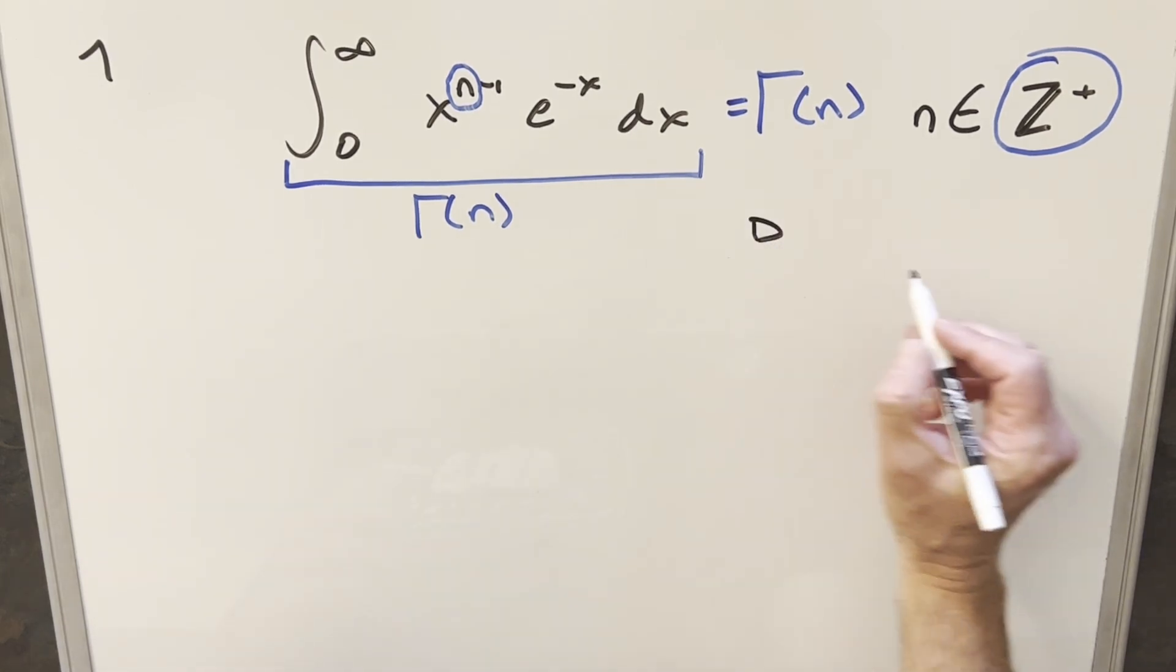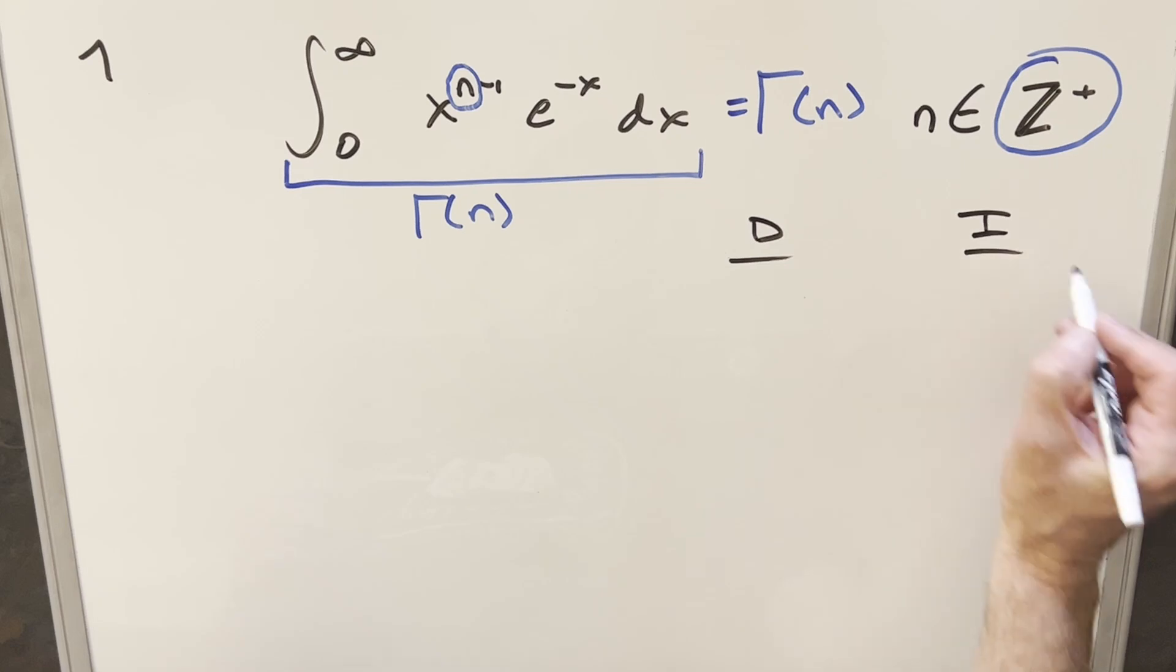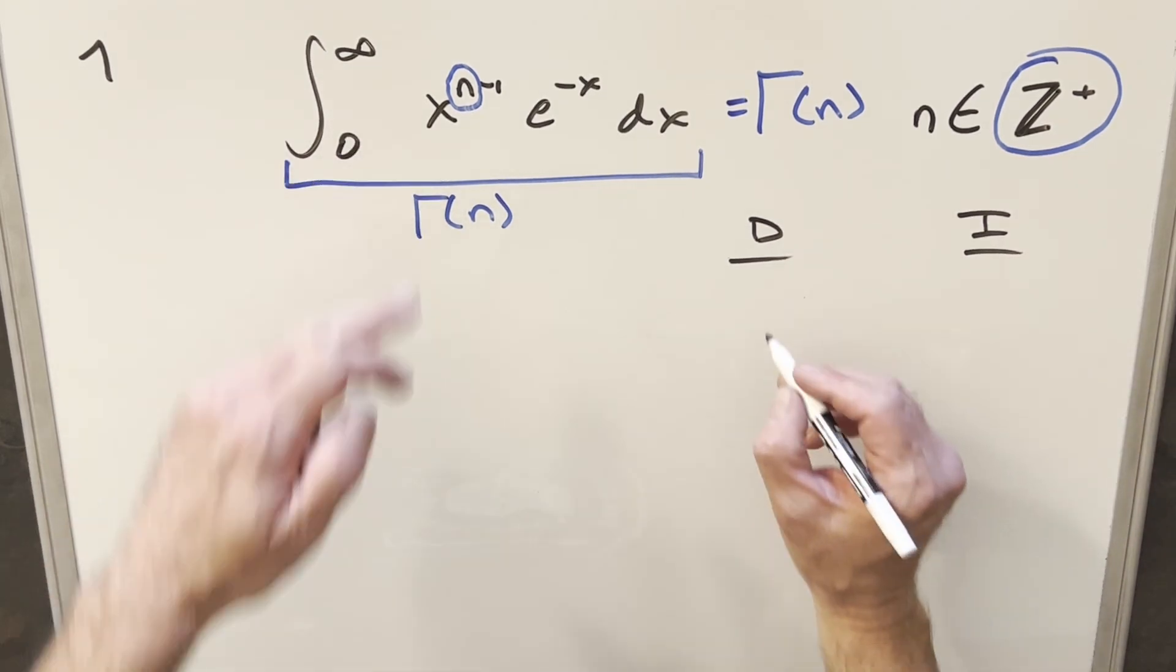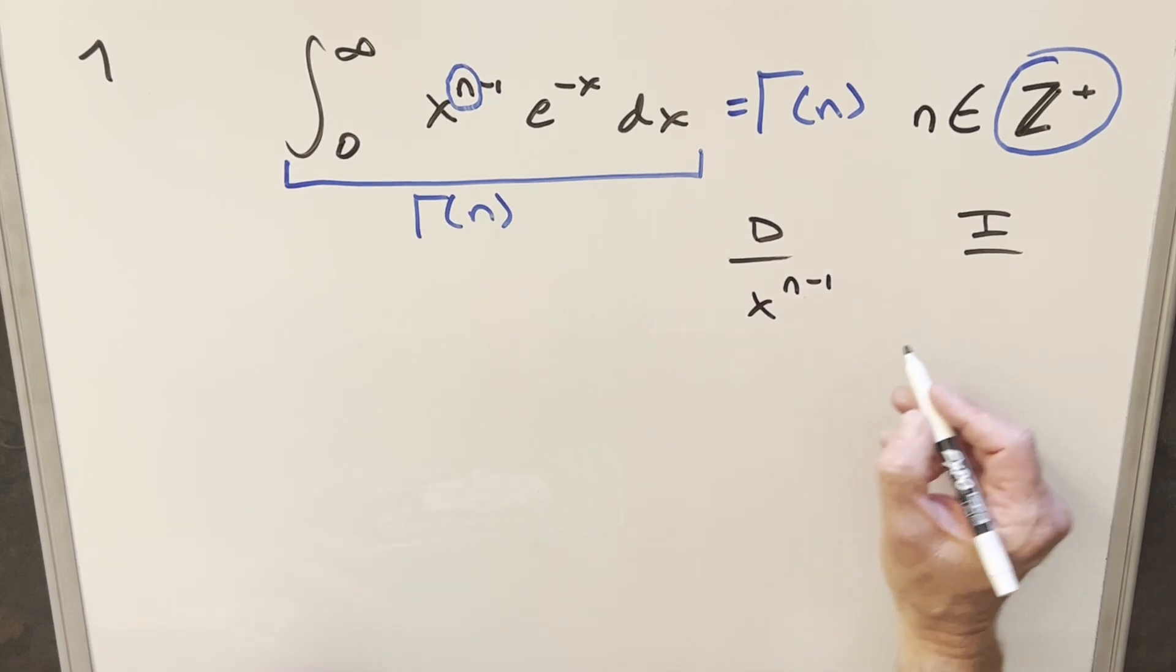So anyway, to get started, my method is just to do integration by parts using the DI method or tabular integration over here to the right. I think what I want to do is differentiate x to the n minus 1 and integrate e to the minus x.